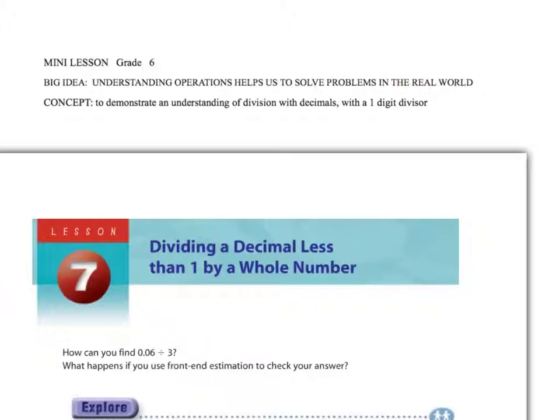Today, we're going to continue with the concept of demonstrating an understanding of division with decimals with a one-digit divisor. The difference today is that we are dividing a decimal that is less than one. So, a small decimal number that is going to have zeros in the front, not whole numbers in the front.